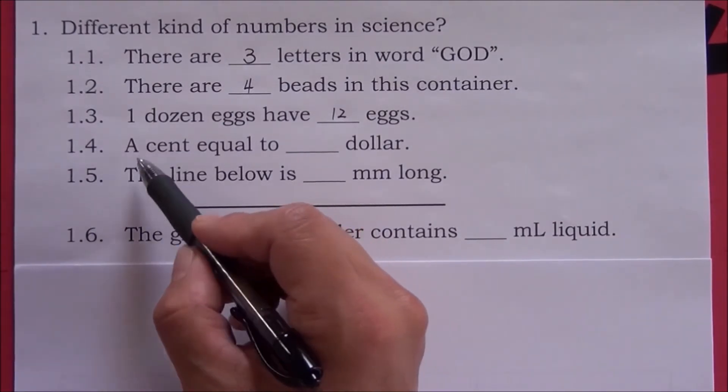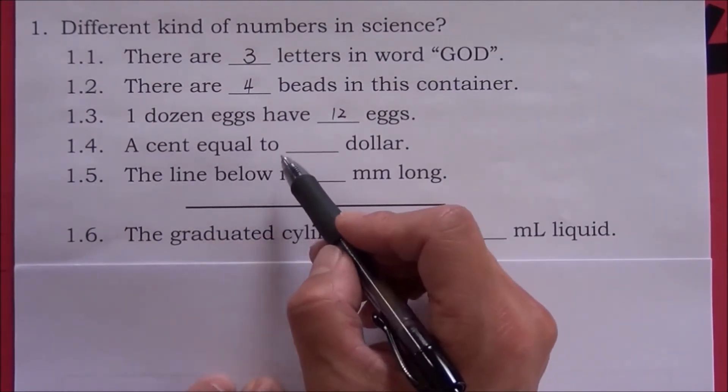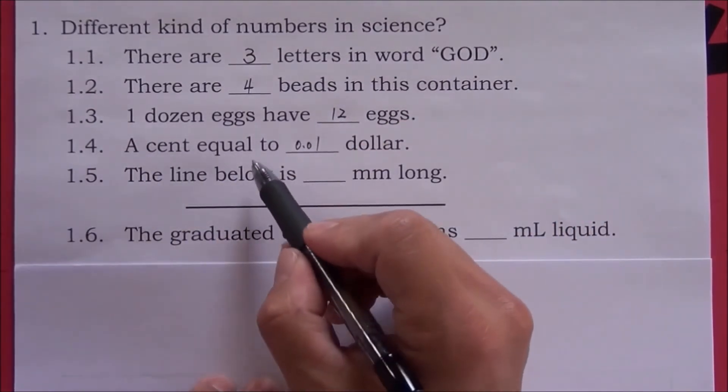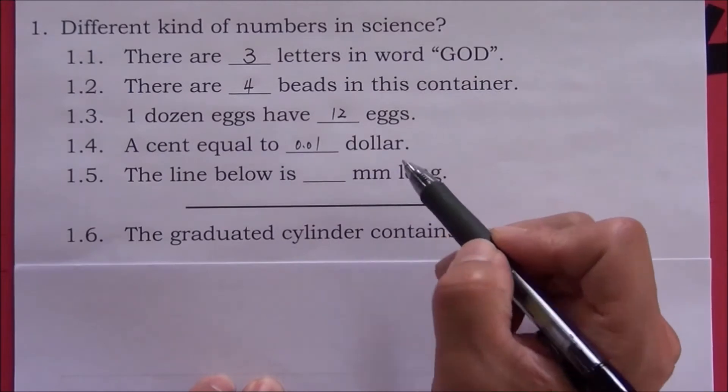Number four: A cent equals how many dollars? A cent equals 0.01 dollar.